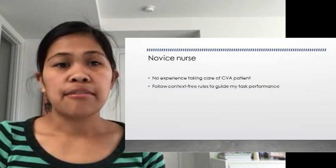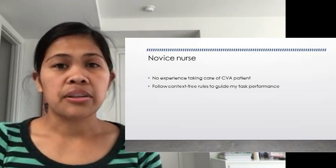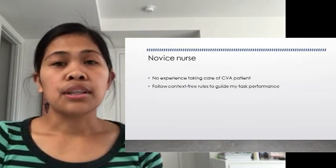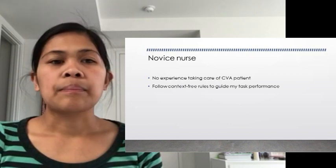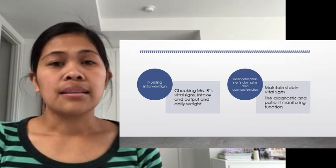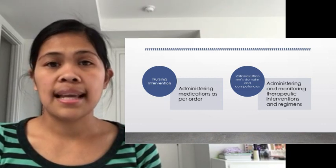My name is Lucila. I am the novice nurse. As a novice, I have no experience with the situations in which I am expected to take care of Mrs. B or CVA patients. I am not capable of using discretionary judgment and must only use context-free rules to guide my task performance. Common attributes accessible to me as a novice include checking Mrs. B's vital signs, measurement of intake and output, and the patient's daily weight. I will administer medications as ordered and monitor therapeutic interventions and regimens.